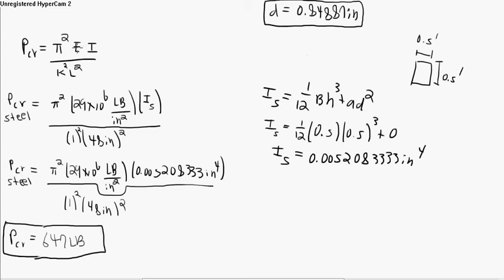So we go ahead and plug that I in right here. And we have our modulus of elasticity which was given in the problem right here that we plugged in. And we know what the k is. And we know what the length was. It was 4 feet but we converted it to inches. Because yet again we want to do consistent units. So then we find the P critical of the steel column, which is 647 pounds.